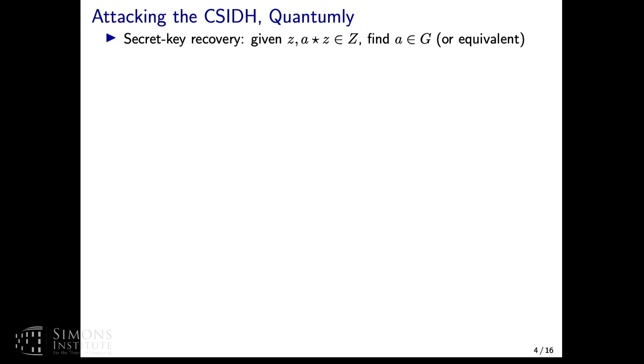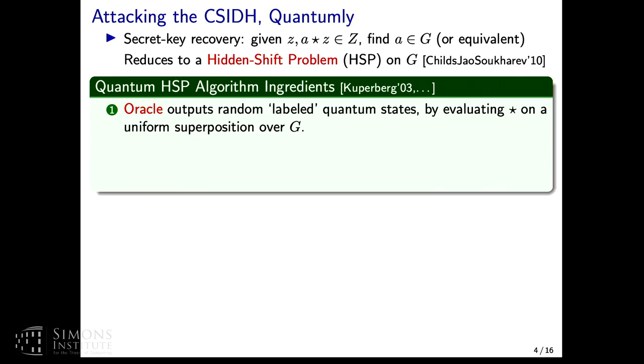So how do we attack CSIDH quantumly? The statement that we're going to go after is secret key recovery. Given the base point or the public parameter z and someone's public key a star z, we'd like to find their secret key a or some equivalent of it. I guess David wanted to credit this to Greg, but Greg didn't want the credit. It seems to me the credit has typically gone to this paper by Childs and Schoukens, which shows how to do the secret key recovery by reducing to this hidden shift problem.